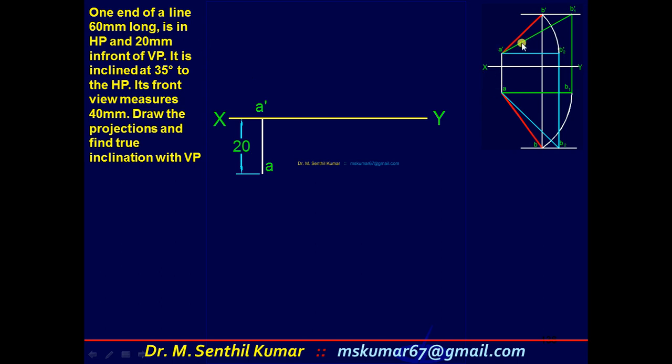The 60mm long, a dash b1 dash is 60. Mark 60 here. A b2, 60, again mark here. And it is inclined at 35 degrees with respect to HP, so this angle is given. This is 35 degrees, mark it here.